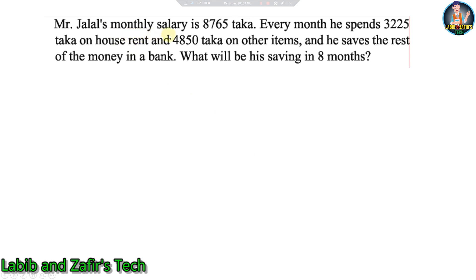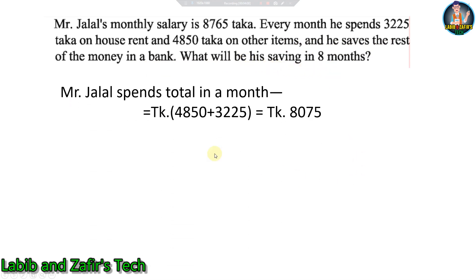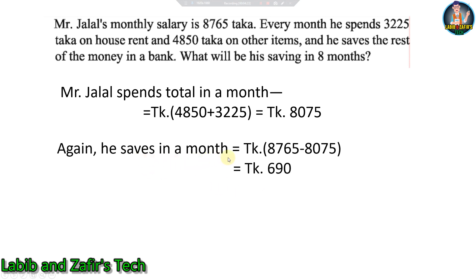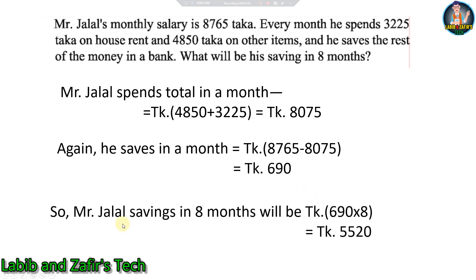Next problem: Mr. Jala's monthly salary is 8765 taka. He spends 3225 taka on house rent and 4850 taka on other items, saving the rest. What will be his savings in 8 months? Solution: Total spending per month = 4850 + 3225 = 8075 taka. Savings per month = 8765 − 8075 = 690 taka. Savings in 8 months = 690 × 8 = 5520 taka.